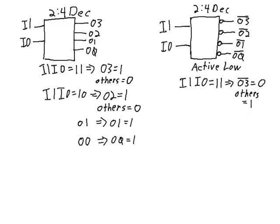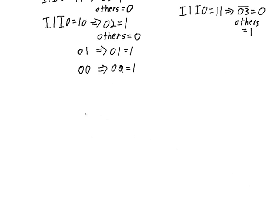Now how would we go about designing a circuit like this? Let's look at the active high decoder. Well, we've got two inputs. We've got I1 and I0 are our two inputs.